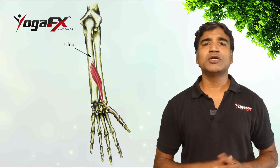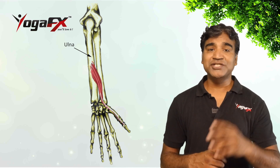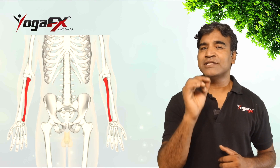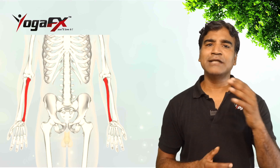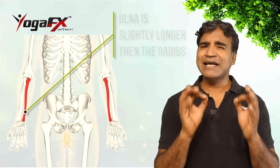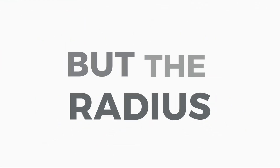The ulna is a long bone found in the forearm that stretches from the elbow to the smallest finger. In anatomical position, the ulna is found on the medial side of the forearm and runs parallel to the radius, the other long bone in the forearm. The ulna is usually slightly longer than the radius, but the radius is thicker, so the radius is considered to be the larger of the two.